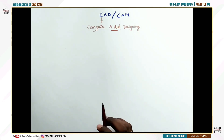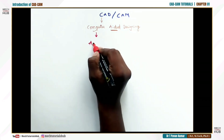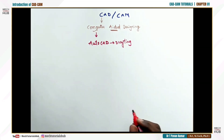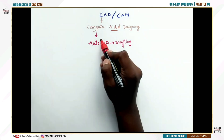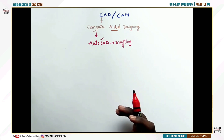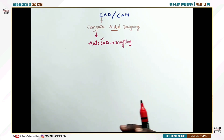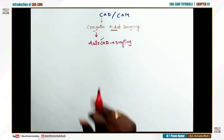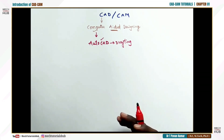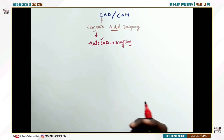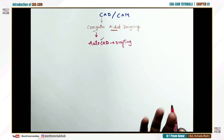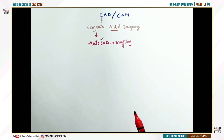We are going to use different types of software for computer aided designing. The basic software is AutoCAD, which is a drafting tool that lets you avoid the traditional way of drawing using a drawing sheet, drafter, and instruments. The same work a draftsman would do can be performed by AutoCAD — a simple software that helps you draw all your layouts, and the output can be taken as a hard copy with the help of printers.